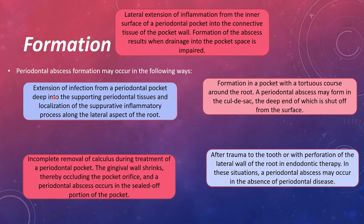Another mechanism is extension of inflammation from the periodontal pocket deep into the supporting periodontal tissues, with localization of the suppurative inflammatory process along the lateral aspect of the root, forming a periodontal abscess. Also, formation can occur in a pocket with a tortuous course around the root — in such a complex pocket, drainage is not proper, so the periodontal abscess may form in the cul-de-sac, trapped inside with the deep end shut off from the surface.